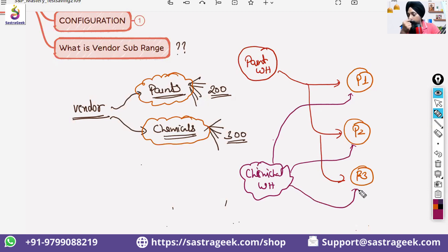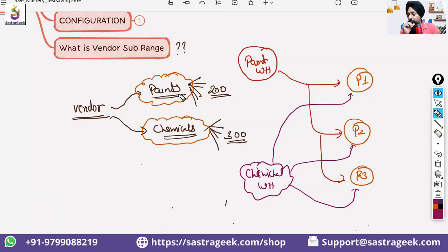Now if you want to maintain some specific data for paints specifically, things are not changing based on which plant — P1, P2, or P3 — is buying. Things are changing based on what subcategory of material the vendor is selling.